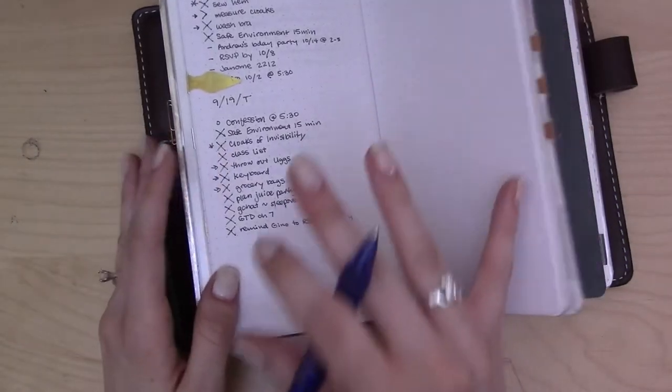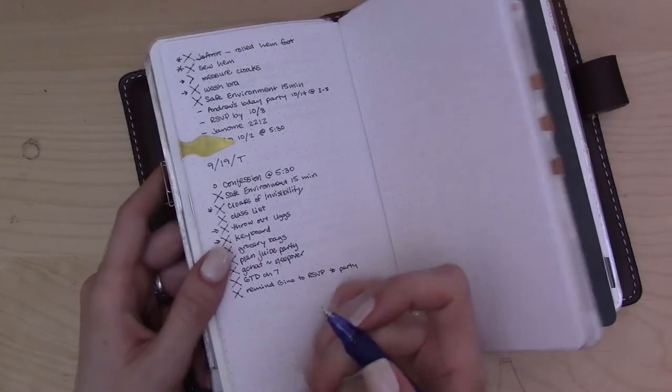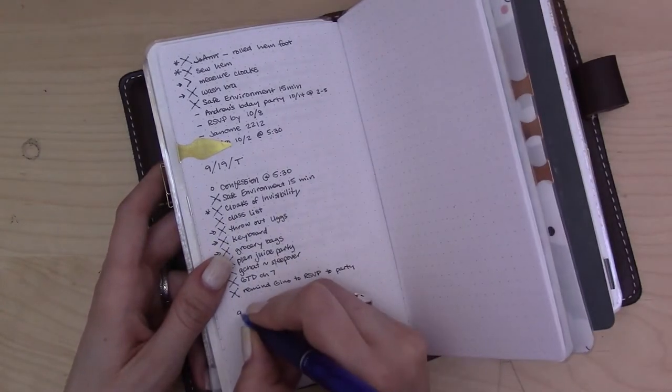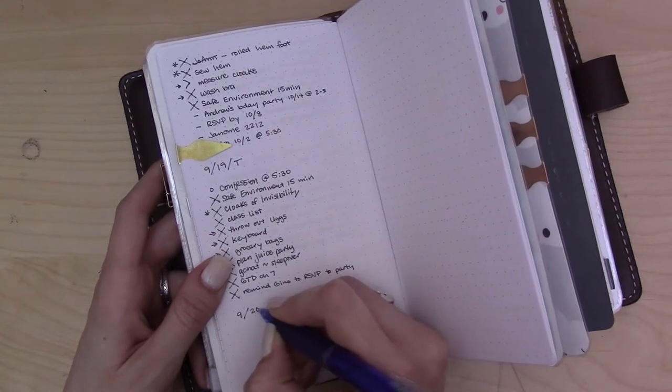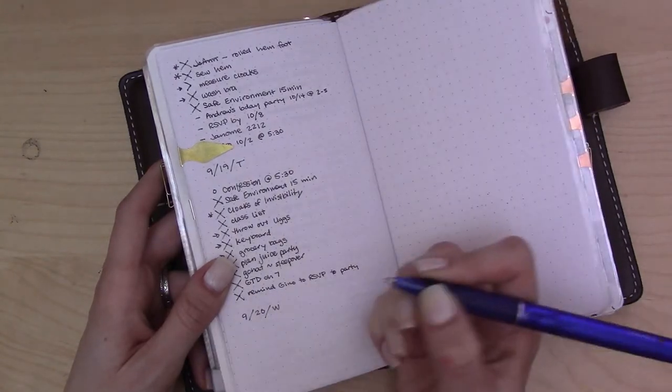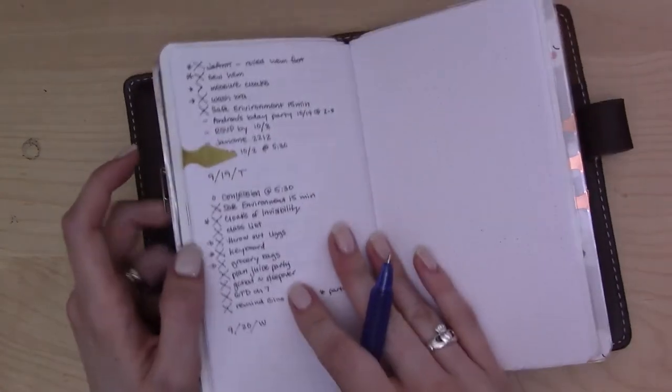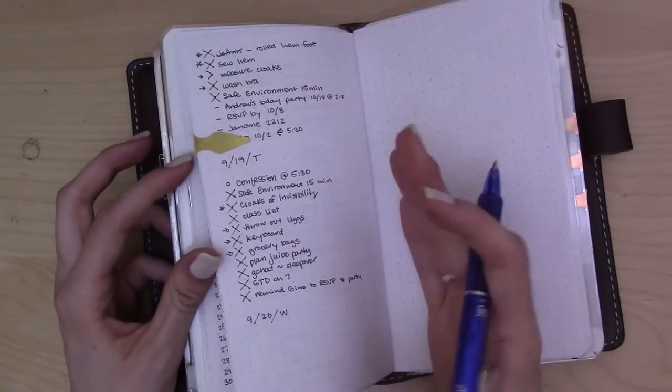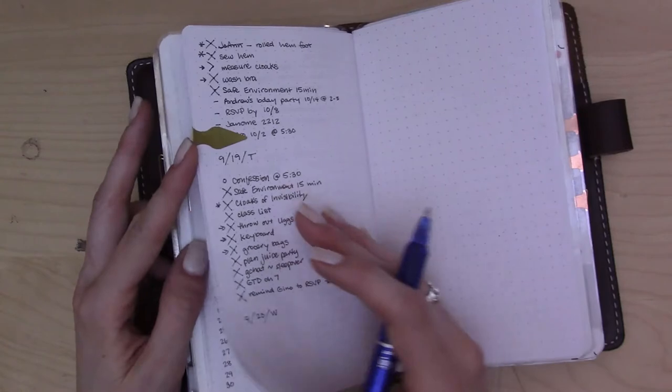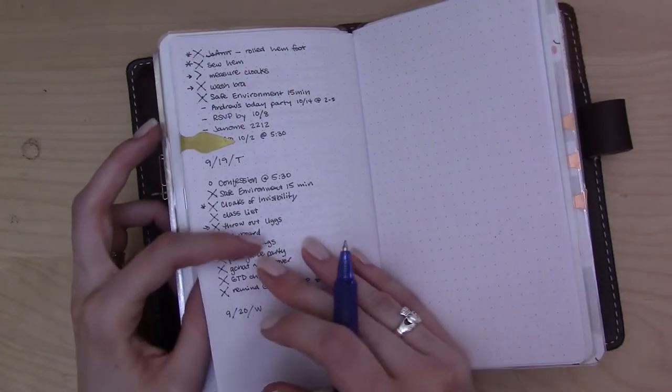But for now, I'm still working on this minimalism kick, so let's go ahead and set up Wednesday first. I do keep forgetting what day of the week it is. I think it's because I don't have the weekly layout, so I feel like it's later in the week than it is, which I know is only going to make this week seem super long.